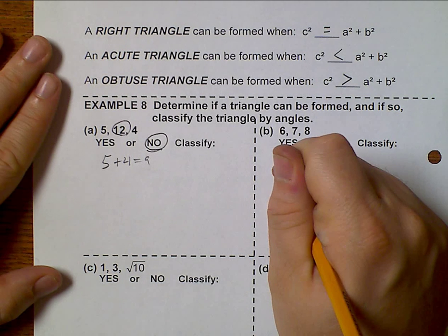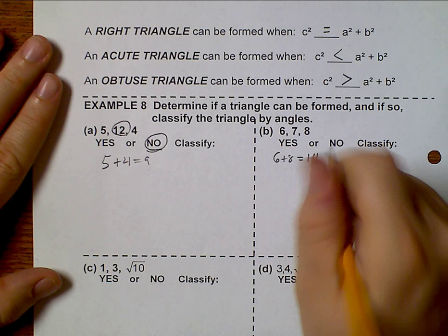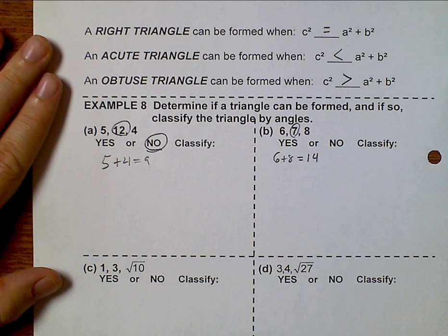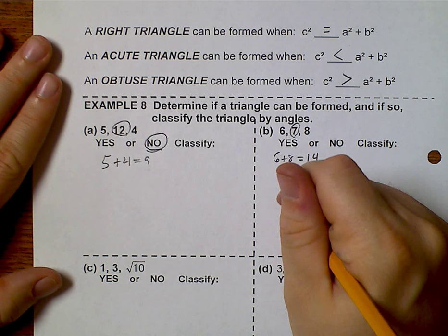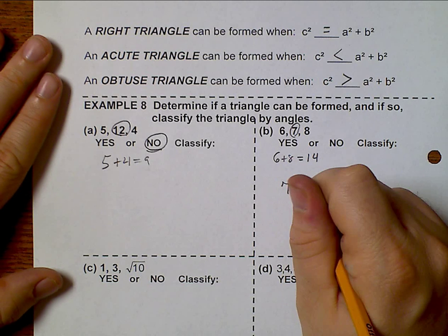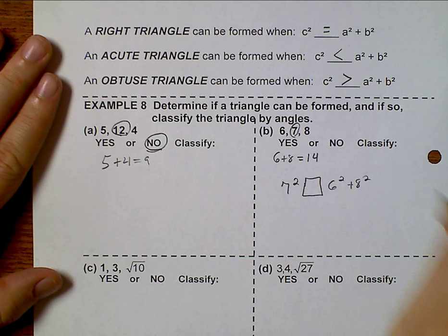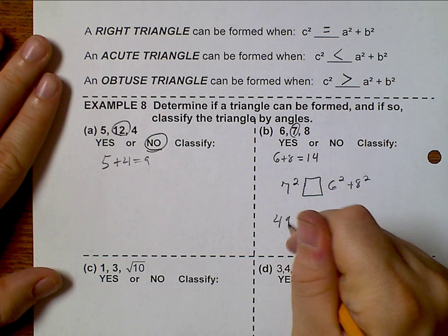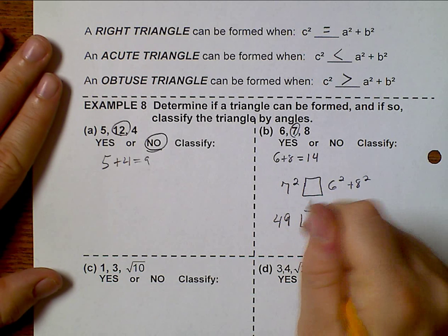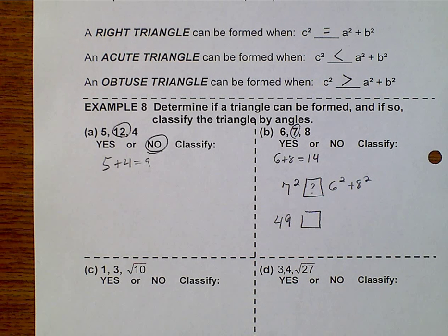Well, 6 plus 8 is 14. Yes. And so I need to try 7 squared. Is related how to 6 squared plus 8 squared? I know that's 49. And if I do 6 squared plus 8 squared, I get 100.